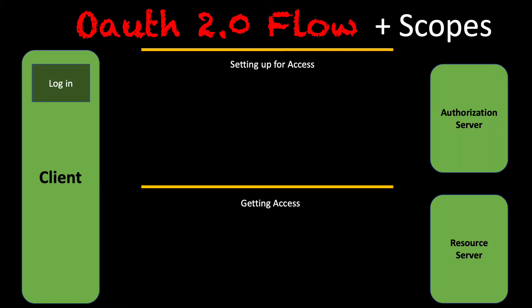For example, we looked at the resource server, we looked at the authorization server, we looked at the authorization grants, and we looked at access tokens. So we covered the main topics in terms of the components of the OAuth 2.0 Flow.